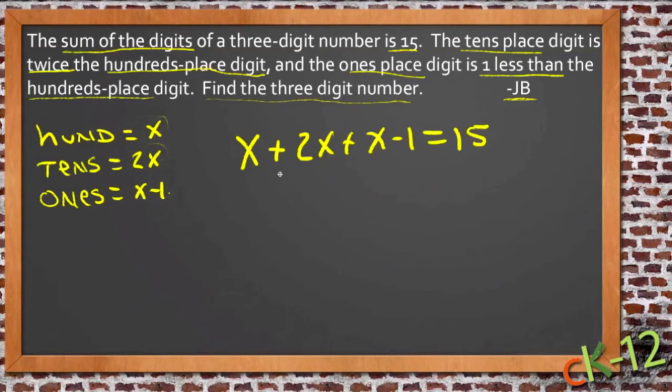So now we can just combine like terms. We get four x's. 4x minus 1 equals 15. Move that one over to the other side and we get 4x equals 16. Divide both sides by 4 and we get x equals 4.